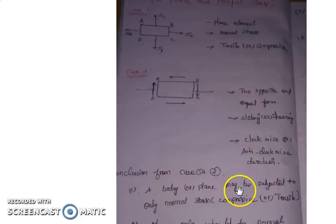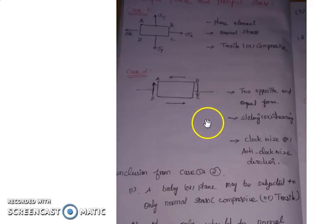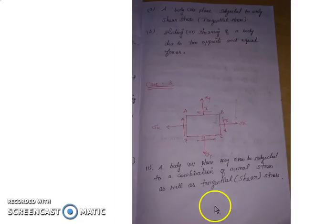So what is the conclusion? For case one, a body or plane element may be subjected to only normal stresses — these may be tensile or compressive. For case two, the plane or body is subjected to only shear stress, also called tangential stress, which tends to slide or shear the body due to two opposite and equal forces.